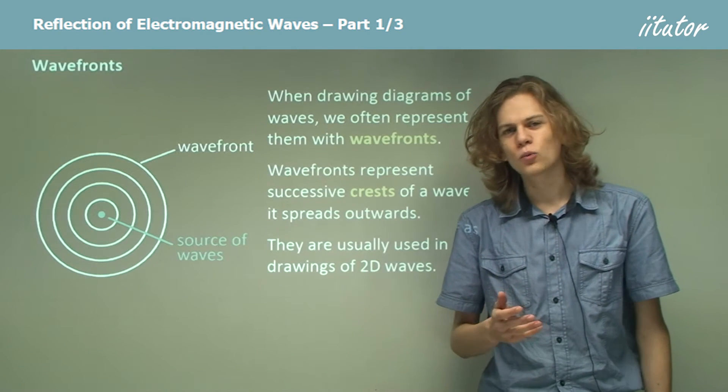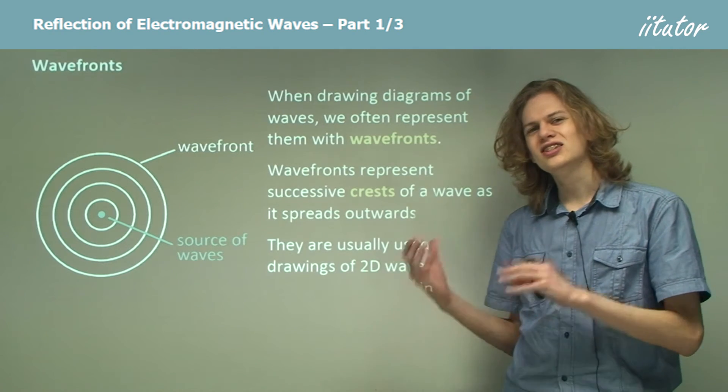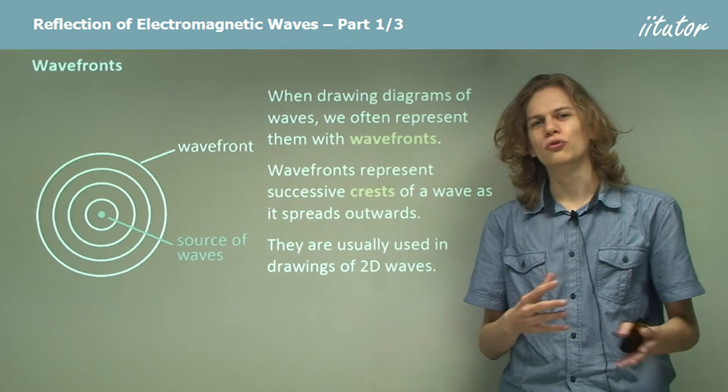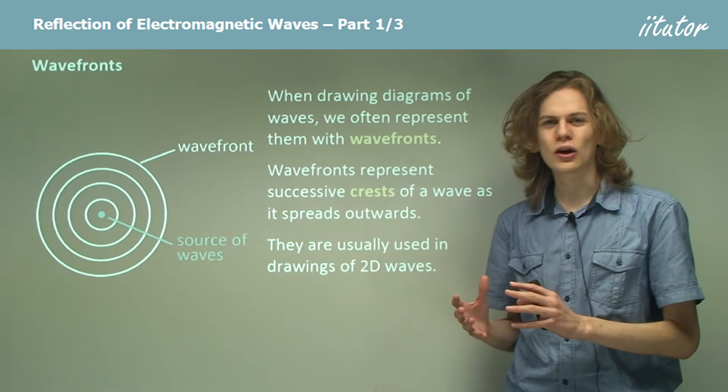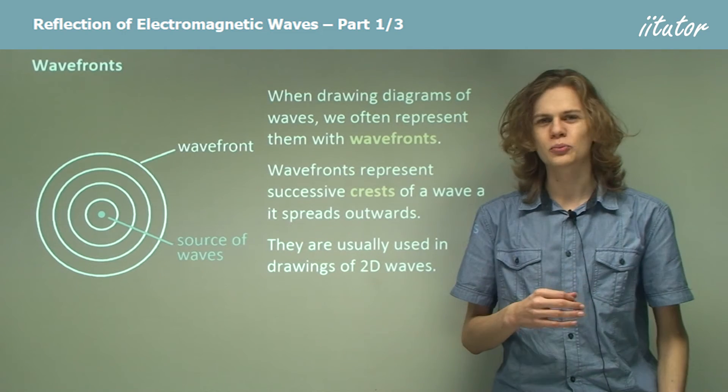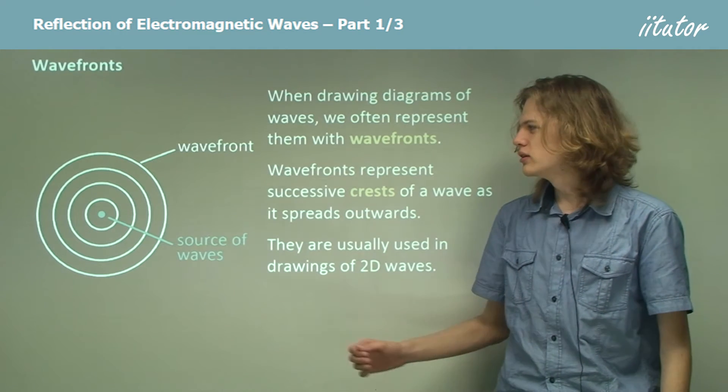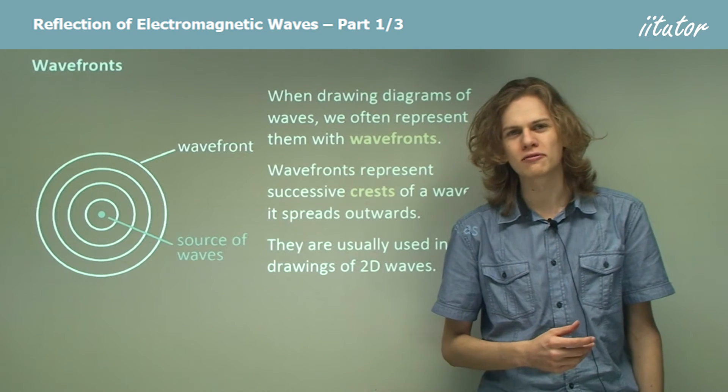In our case though, we can use wavefronts to make a simplified view of what the reflection of light looks like. So of course in reality, light is a three-dimensional wave, but to make things simpler, to make it easier to look at, we can use a two-dimensional representation of the wave.